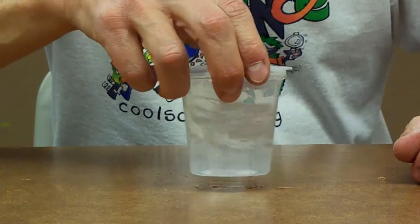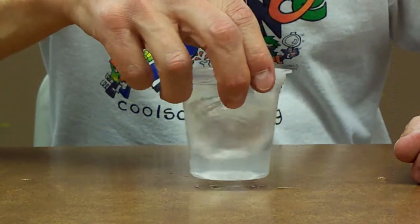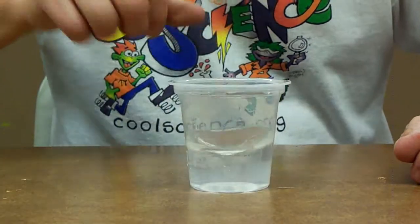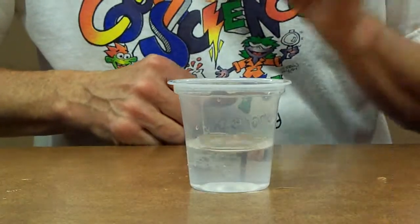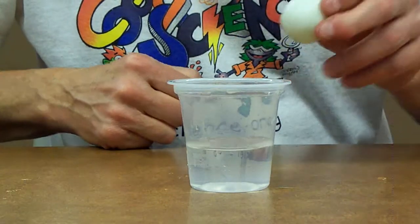So notice when I swirl the cup in the water, we get that nice bowl shape, and that's going to let the ping pong ball stay right in the middle.